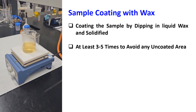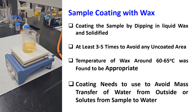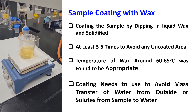High temperature forms thin liquid wax, which may cause penetration into the sample, while low temperature may not spread uniformly on the surface. Temperature of wax around 60 to 65 degrees C was found to be appropriate. Coating is needed to avoid mass transfer of water from outside or solids from the sample to water.